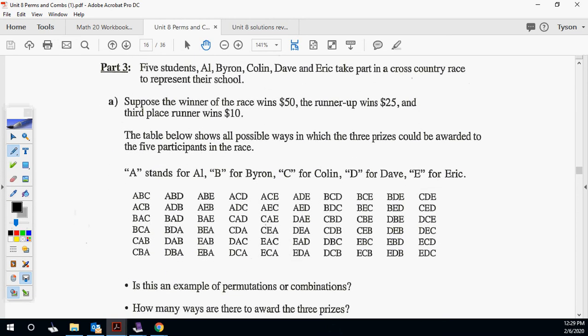Another different example here. Five students, Al, Byron, Colin, Dave, and Eric, take part in a cross-country race to represent their school. Suppose the winner of the race gets $50, runner up gets $25, and third place gets $10. The table below shows all possible ways the three prizes could be awarded to five participants. A stands for Al, B stands for Byron, C stands for Colin, D stands for Dave, and E stands for Eric.